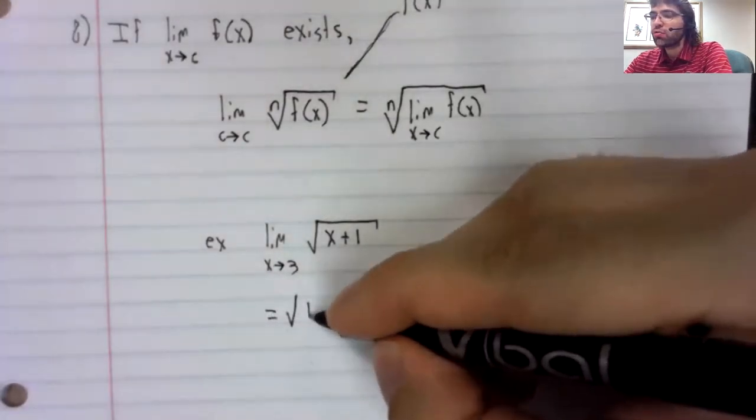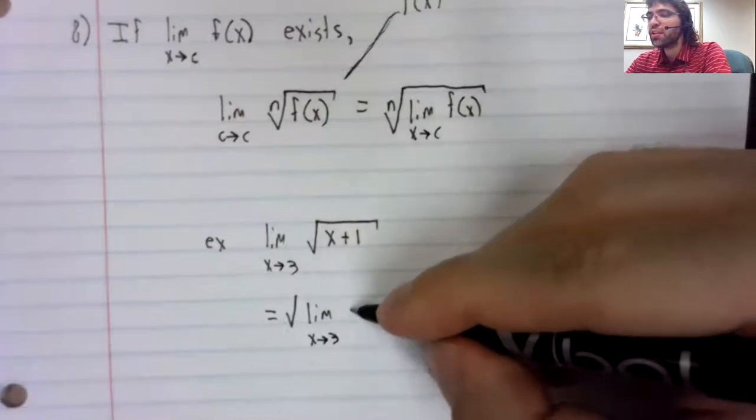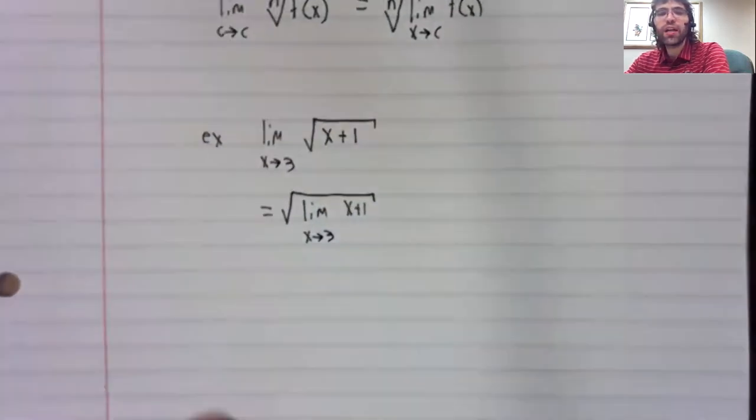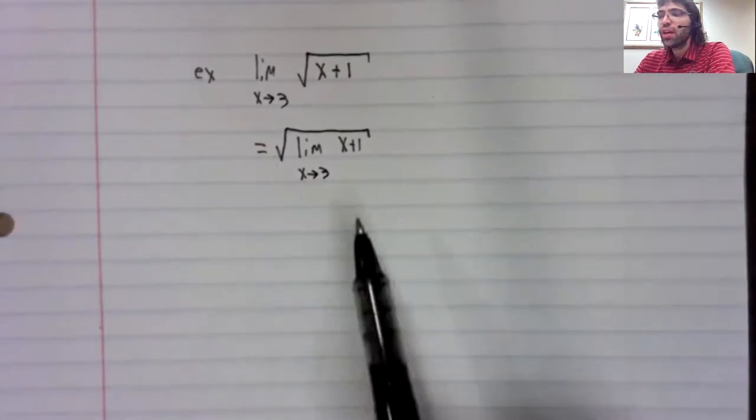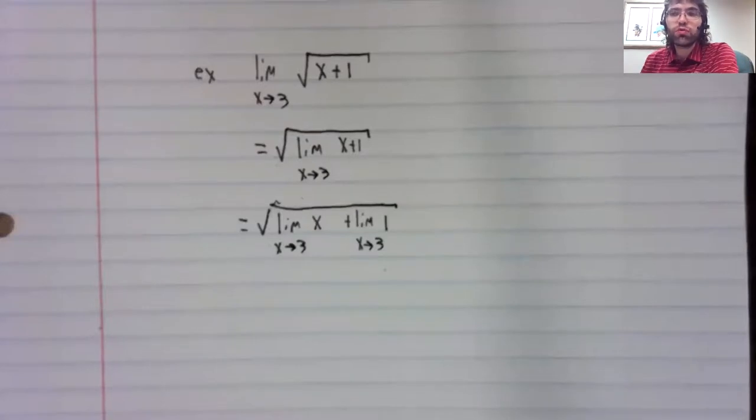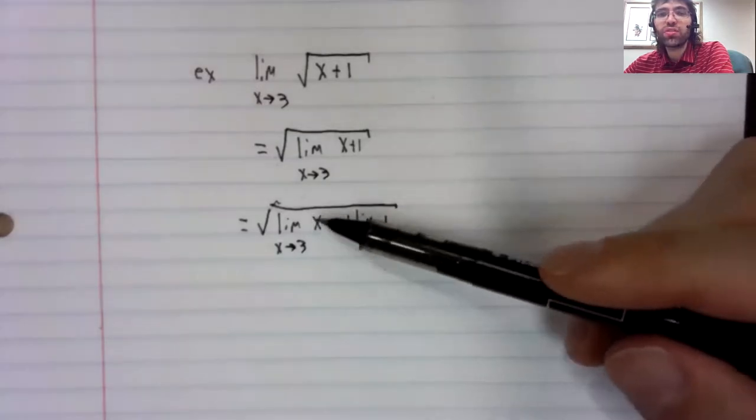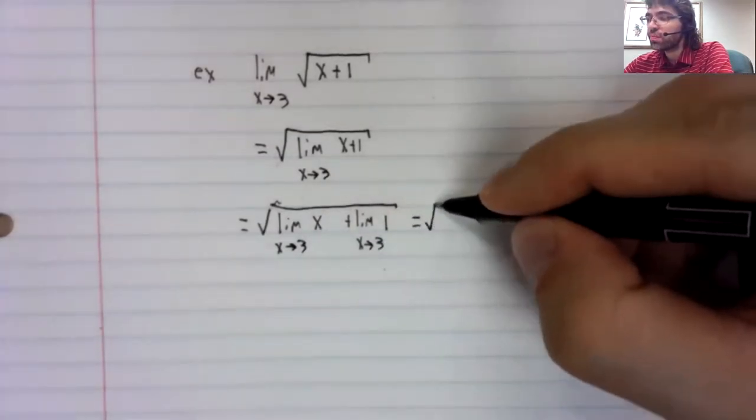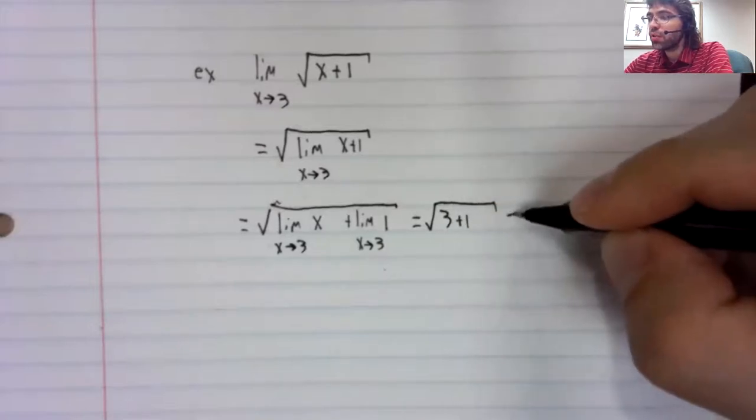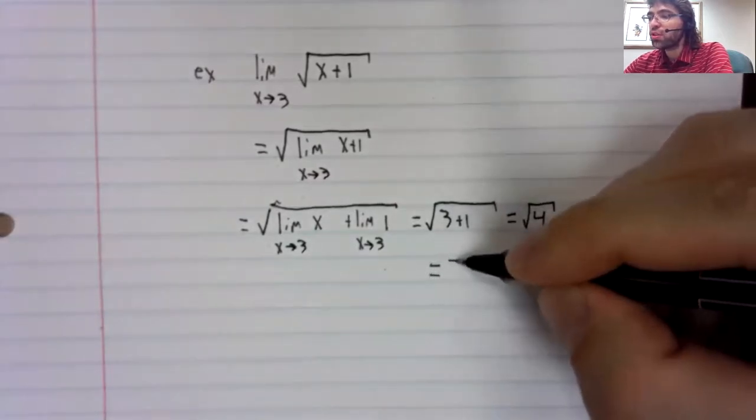What this rule says is that you can take this limit and then we can take this limit using rules we've already seen. The limit of a sum is the sum of the limits, and we wind up with 2.